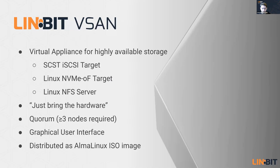That brings us back to Linbit vSAN, which is the sum of all that. A glimpse behind the scenes: we use SCST for our iSCSI target because it works well with a lot of hypervisors, and we use the standard NVMe over Fabrics target and the standard NFS server that come with Linux. In addition to all the software, we also provide a setup wizard — the idea is you just bring the hardware, click through a couple of setup points, and it's done. It also configures defaults that work very well with DRBD-based setups, such as Quorum.